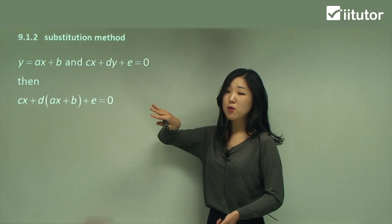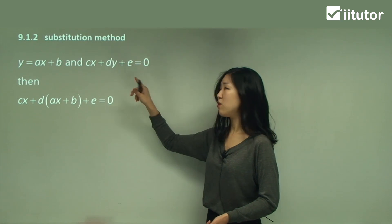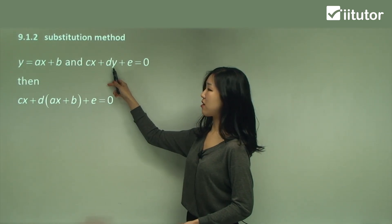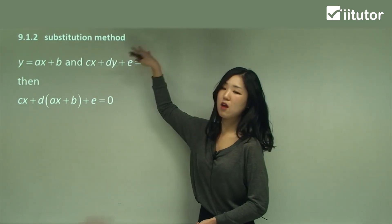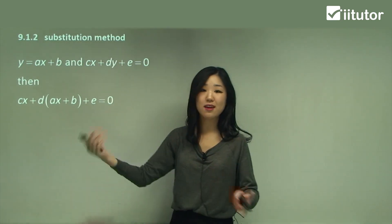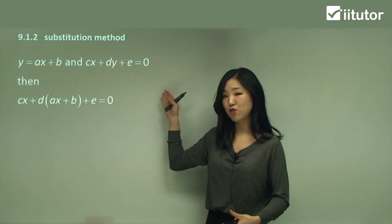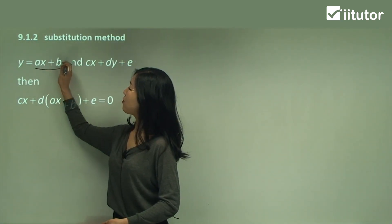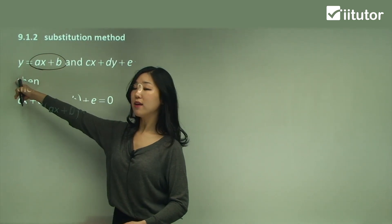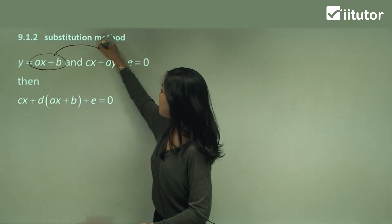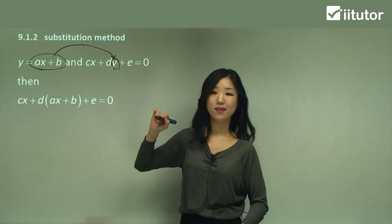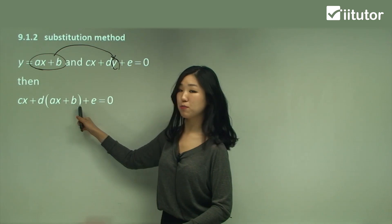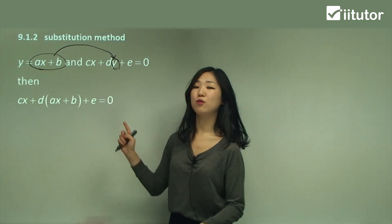The reason I'm using the substitution method is when it's annoying to make y the subject for the second equation, because you'd have to move cx plus e over to the other side and then divide by d — it gets really annoying. So instead of rearranging that, I'm simply going to substitute, because that expression equals y. I'm going to substitute that into y. So I get: cx plus d times (ax plus b) plus e equals zero.